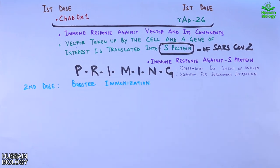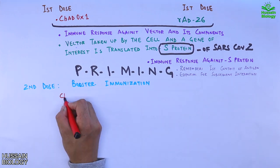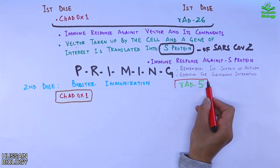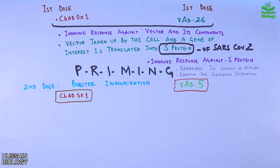In the second dose of AstraZeneca, we use the same vector ChAdOx1, whereas in Sputnik V vaccination we use rAd5 as a vector, which is different from the first dose vector rAd26.